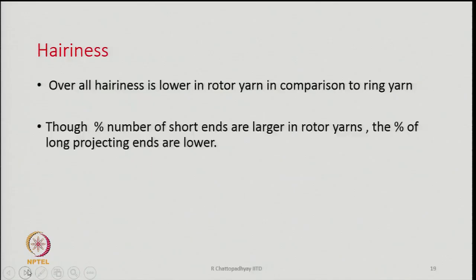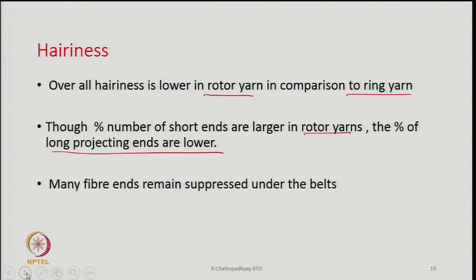Overall hairiness is lower in rotor yarn compared to ring yarn. Although the percentage number of short ends is larger in rotor yarns, the percentage of long projecting ends is lower. Many fiber ends remain suppressed under the belts, which are tightly wrapping the yarn — these suppressed ends cannot project out, reducing hairiness compared to ring yarn.